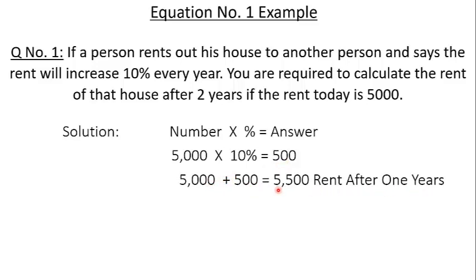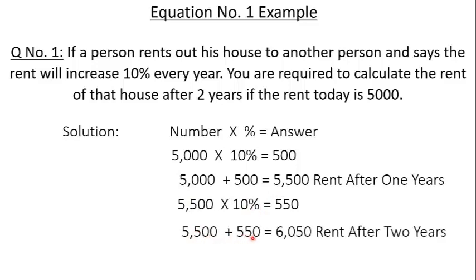Second year we will multiply 5,500 with 10%. We will get 550. Now add this into 5,500. We get 6,050. So, after 2 years the rent will be 6,050.